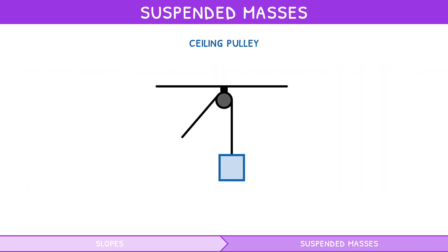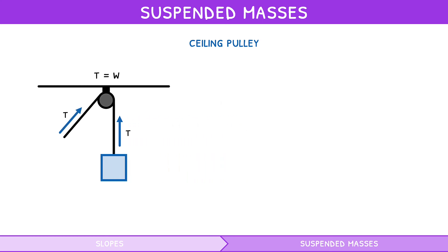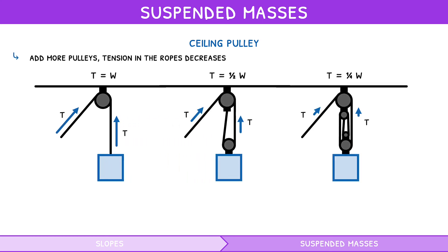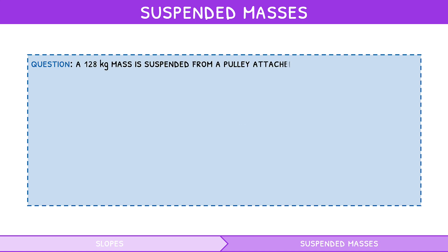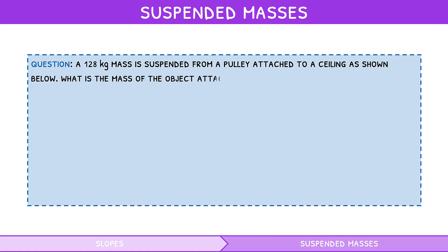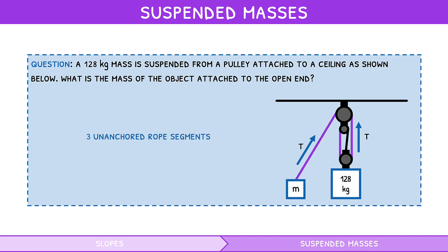In a ceiling pulley, a mass is suspended via a pulley fixed to the ceiling. As normal, the tension in the rope equals the weight of the object. However, as you add more pulleys, the tension in the ropes decreases — this effect is called mechanical advantage, used so that less force needs to be applied to the open end of the rope to lift an object. The tension equals the weight of the object divided by the number of unanchored rope segments. For example, a 128 kilogram mass suspended with three unanchored rope segments gives a tension of 418 newtons, and the mass attached to the open end is 42.7 kilograms.